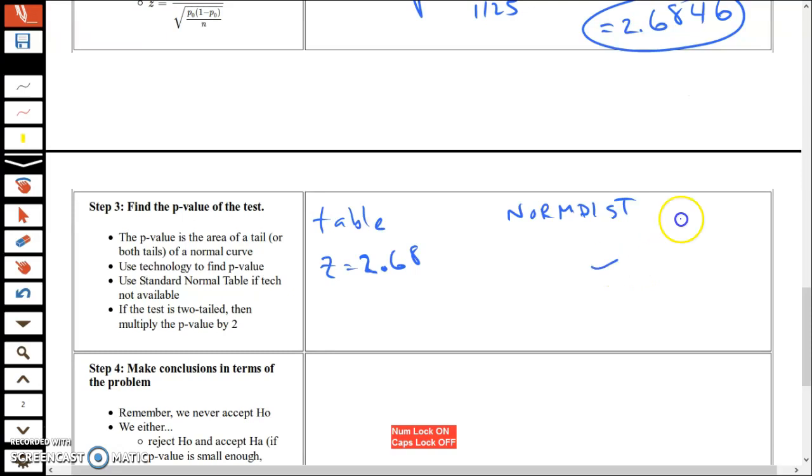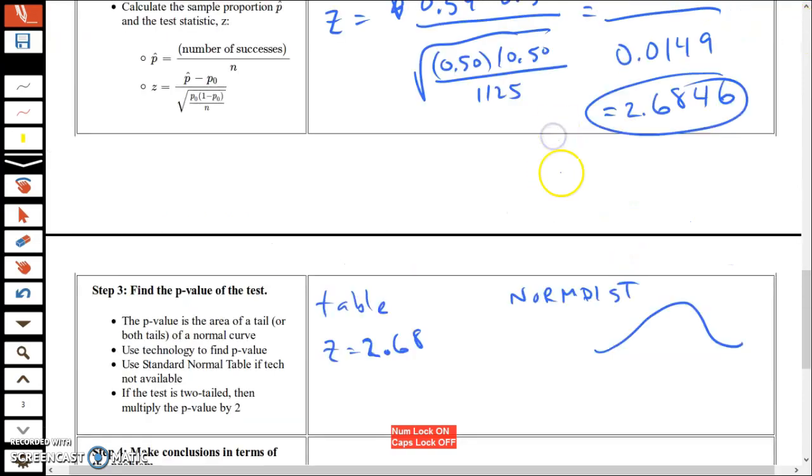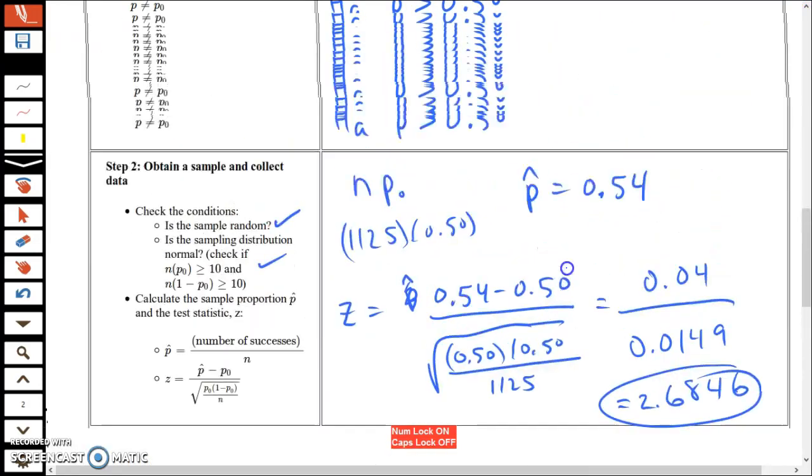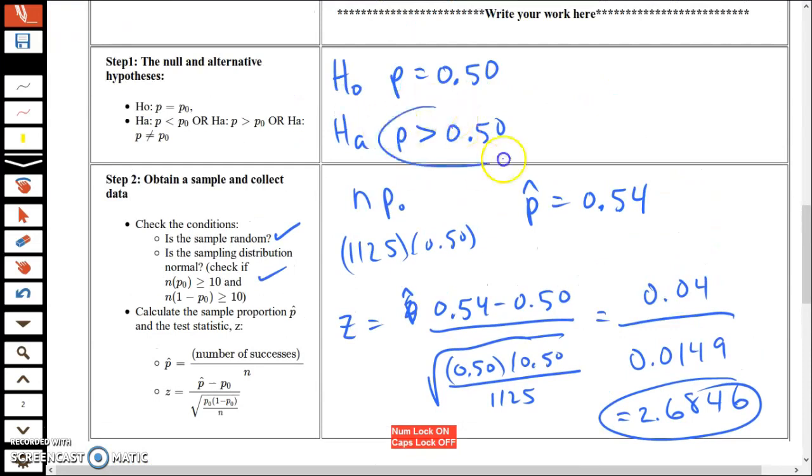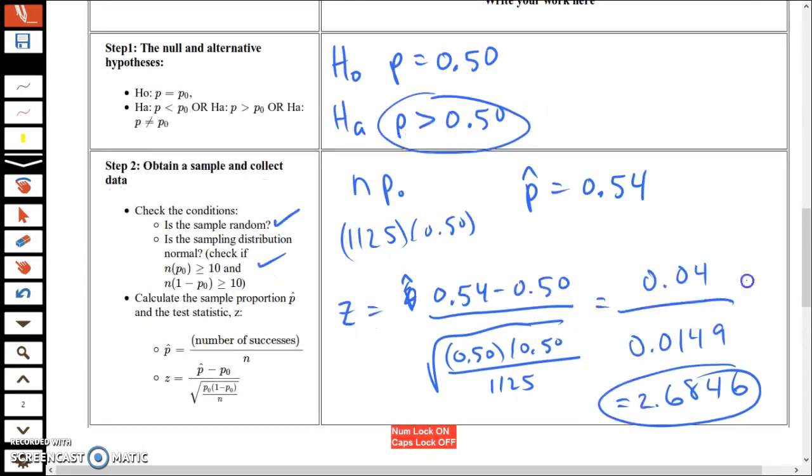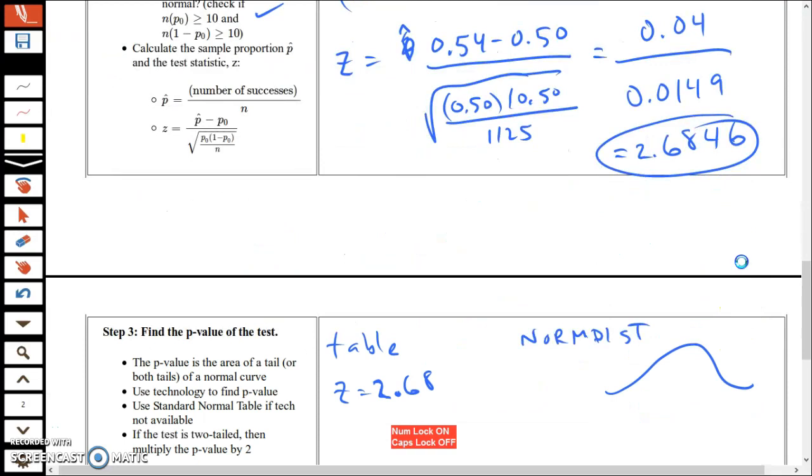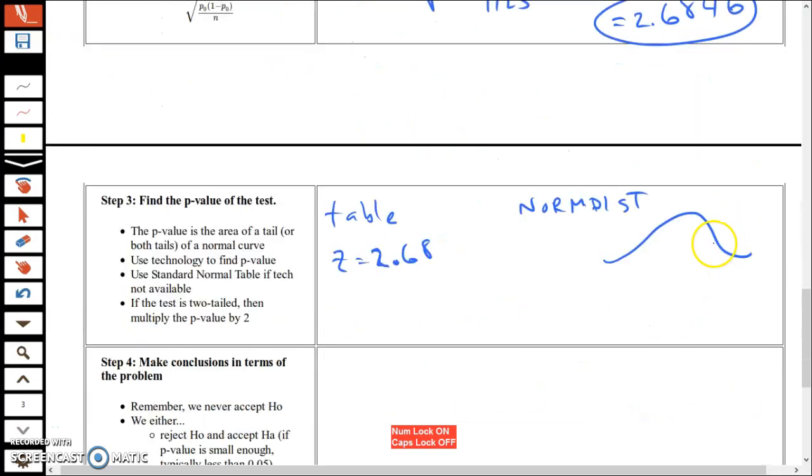One more quick comment. Let's draw a picture. My alternate hypothesis was a greater than, so that means it's a right-tailed test. When I look up the p-value, I need to look up the right side. If you're using a table, it might be easier to just look up negative 2.68, because that's how the table works.